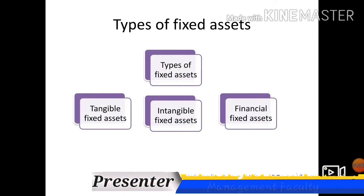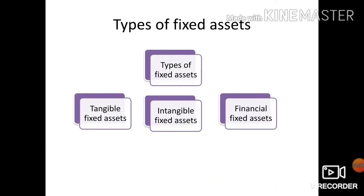Now let us see what are the types of fixed assets. The fixed assets are divided into three types: tangible fixed assets, intangible fixed assets, and financial fixed assets. Let us discuss each one by one.